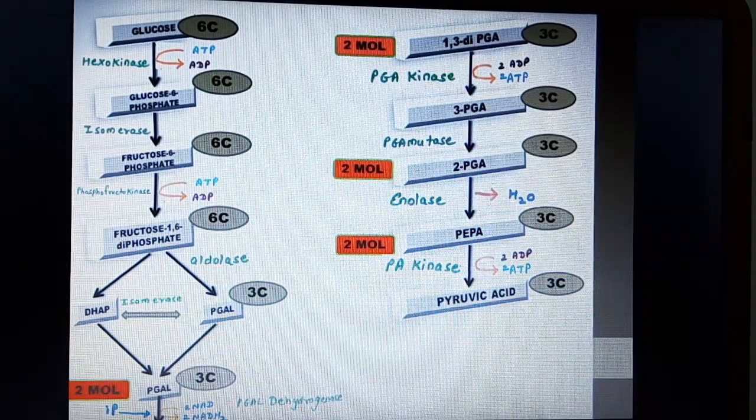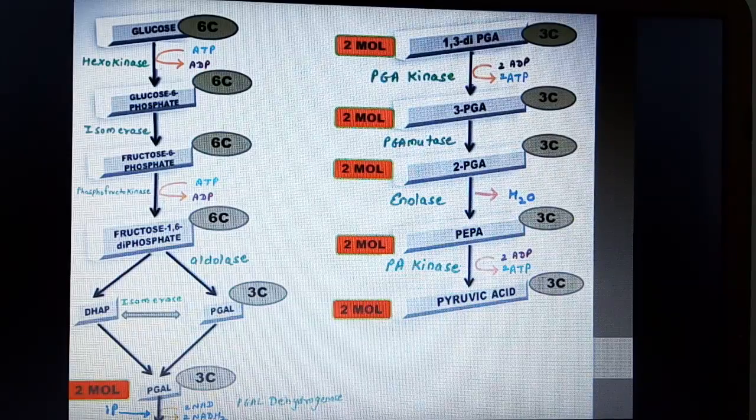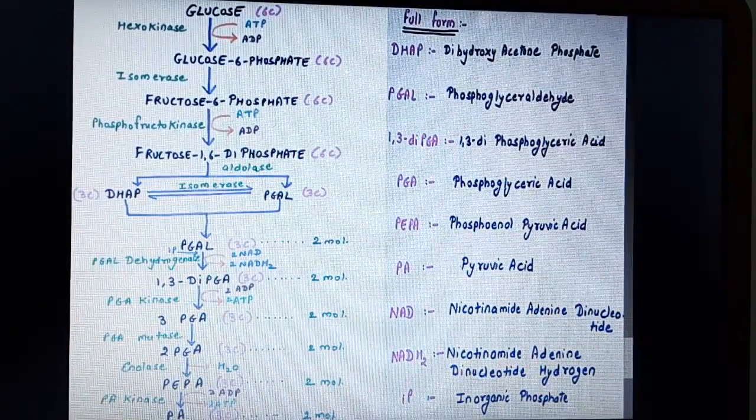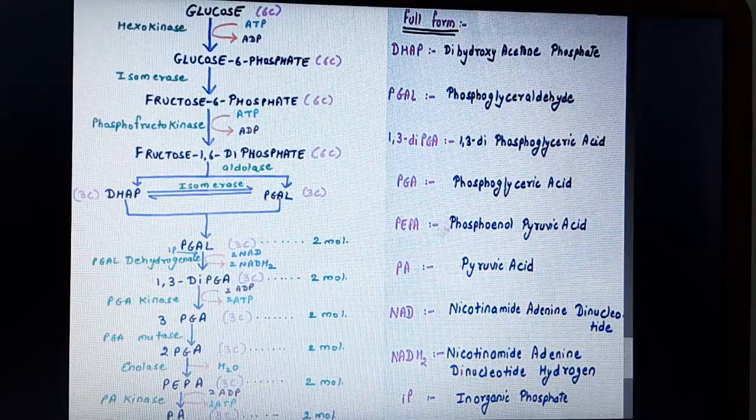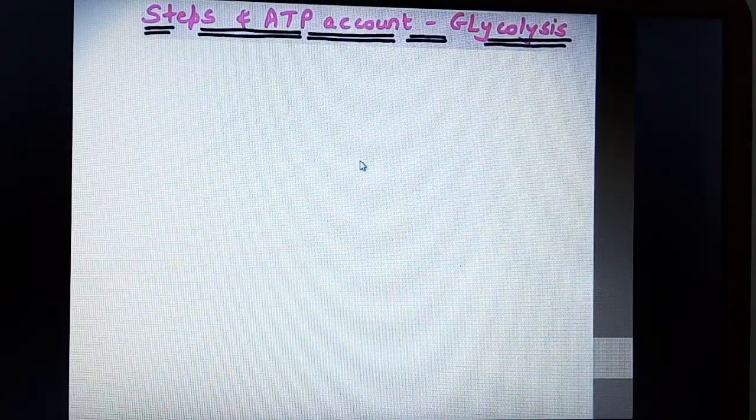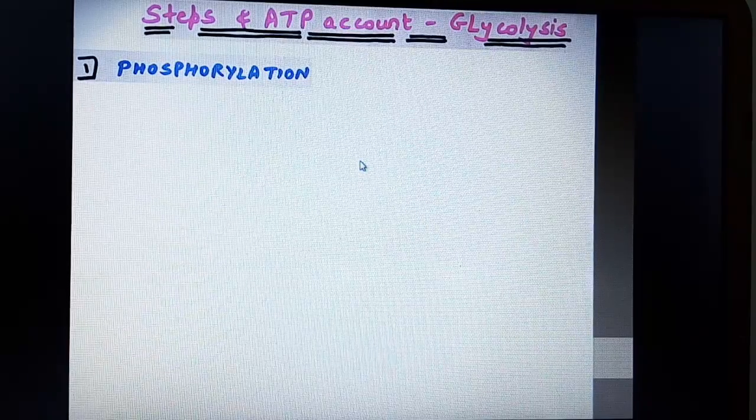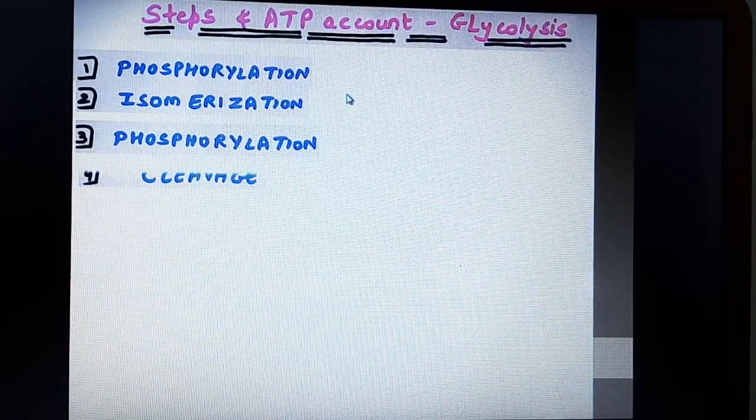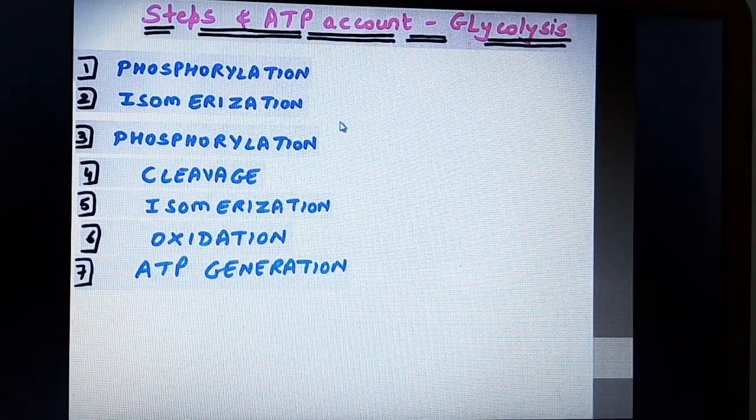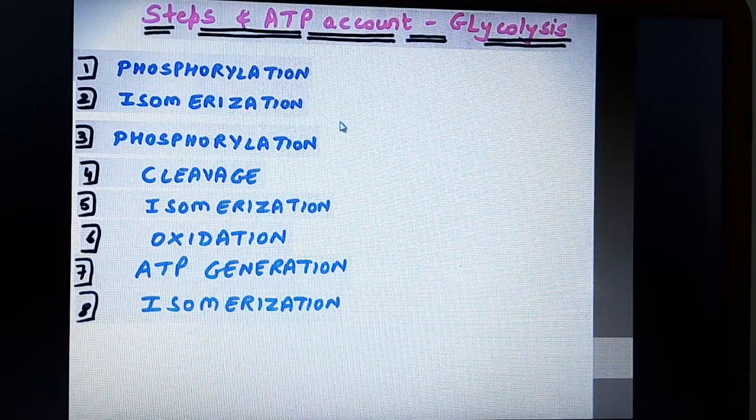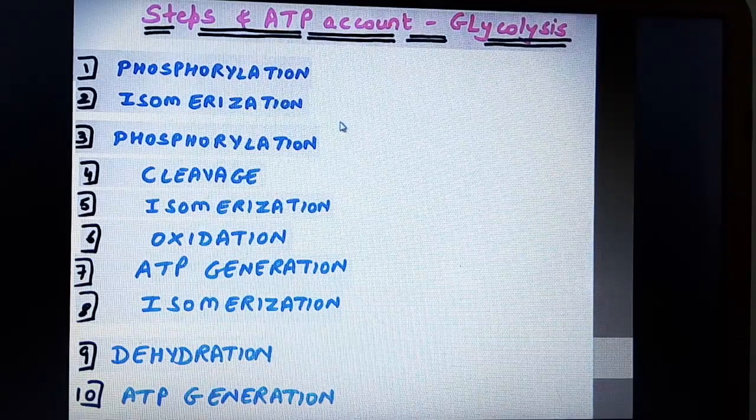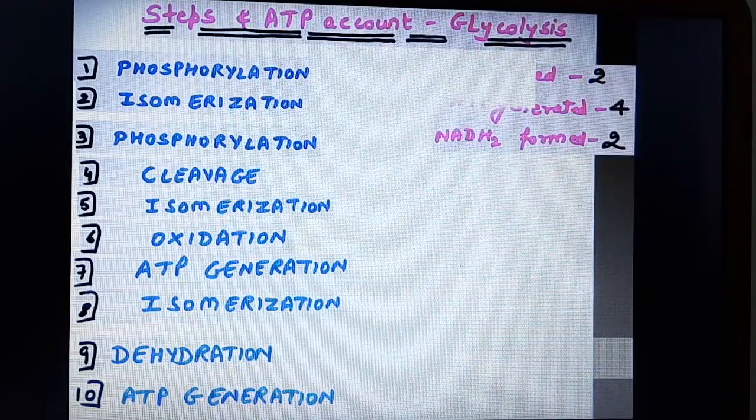So these are 10 steps of glycolysis. When you look at this structure you can easily understand as I have written the full forms and everything that is involved. Let's see the energy account what exactly happens. Now in first was step phosphorylation, isomerization, again phosphorylation, 4 step cleavage, isomerization, oxidation, ATP generation, isomerization, dehydration and ATP generation. So these are the 10 steps of glycolysis.